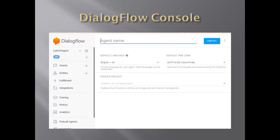If you look at the Dialogflow console, it basically consists of an agent, intents, and entities. And if you need to call any third-party web service or talk to your enterprise server, you can do that by creating a webhook and putting it on the fulfillment section.